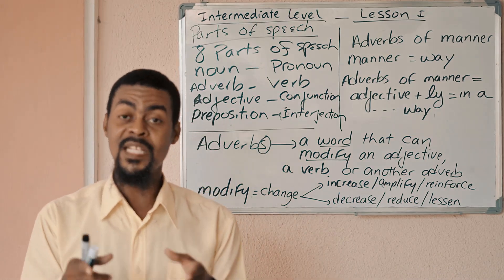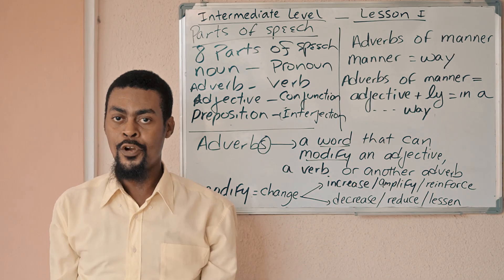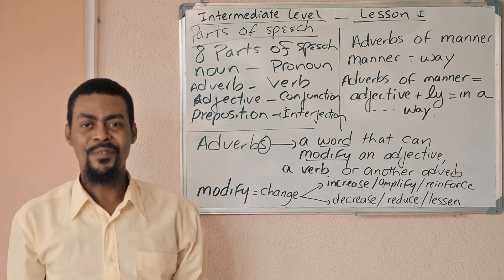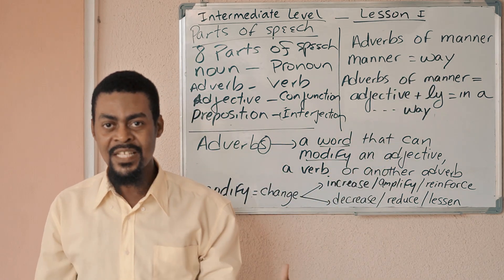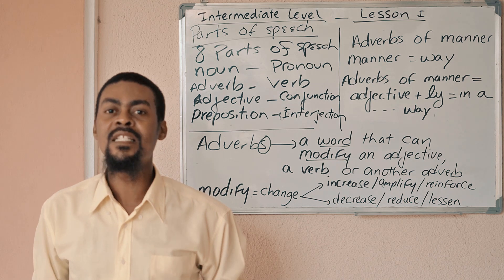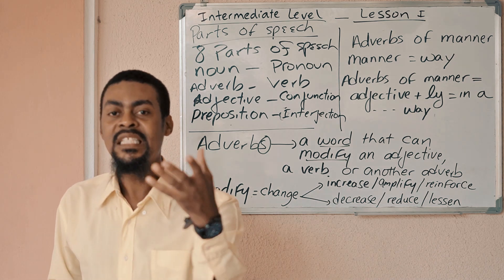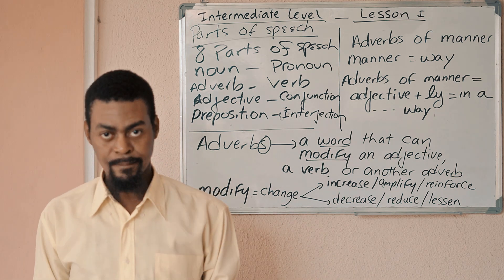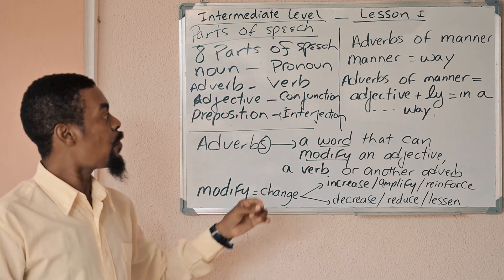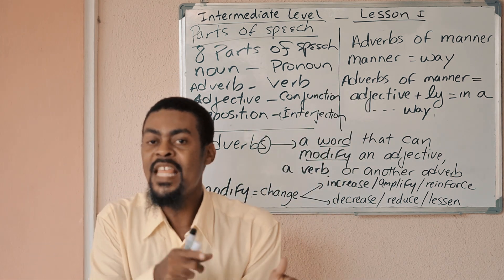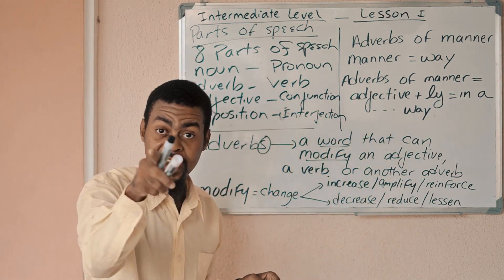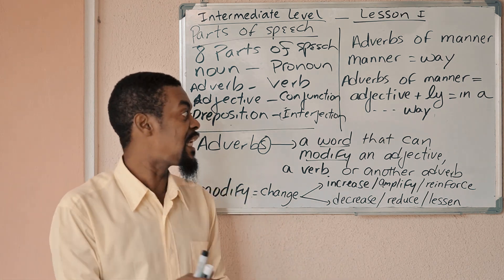But in this lesson, we are not going to talk about all adverbs. We are just going to talk about adverbs of manner. Manner means way — the way something is, the way you do something. So adverbs of manner are usually adjectives that you add LY to. When you have an adjective and you add LY, this adjective becomes an adverb — an adverb of manner.